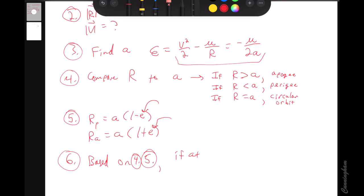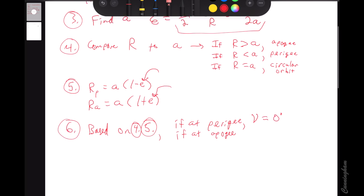You'll know if you're at apogee or perigee. If you're at perigee, that's where we measure true anomaly from, so your true anomaly is going to be zero degrees. And if you're at apogee, you'll always have a true anomaly of 180. Those are just definitional properties of apogee and perigee.